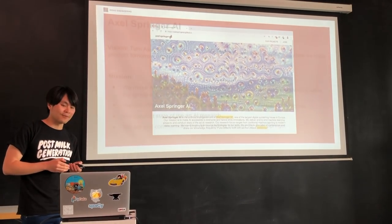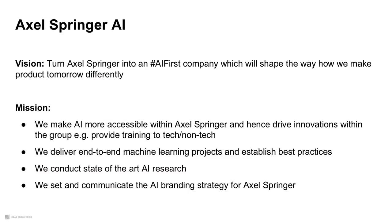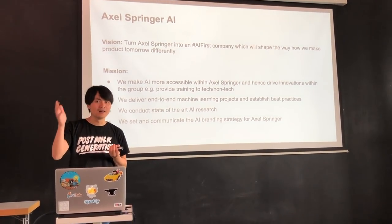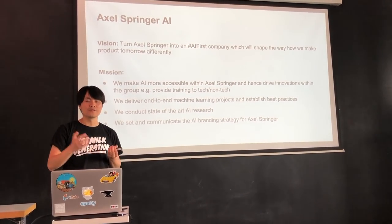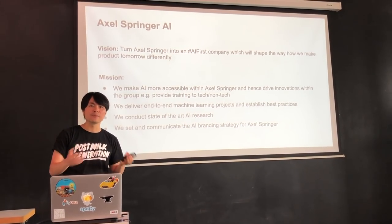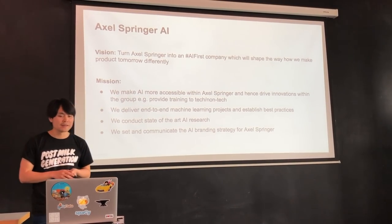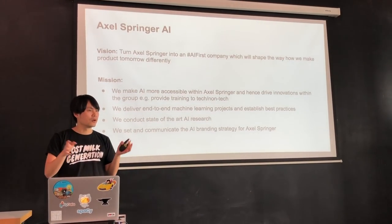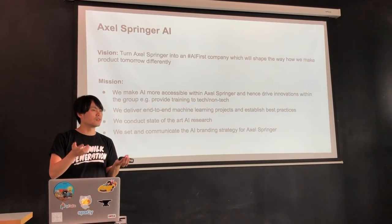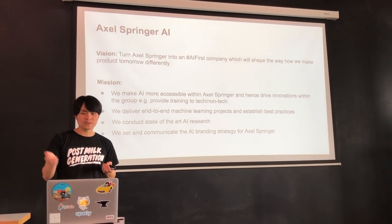The basic idea is to create 'Axel Springer AI,' which will become a unit for the entire group to drive innovation. The vision is to turn Axel Springer into an AI-first company — which is fundamentally a culture aspect, about changing how we create products in the future. Like Google, Alibaba, and Amazon, it's not just a buzzword, it's about where we want to go and how we use data and technology to make our products better. Our mission will be to make AI and machine learning accessible everywhere in the group.